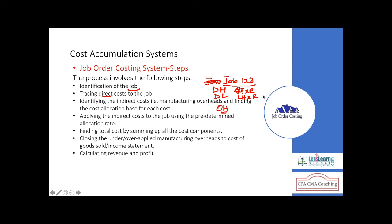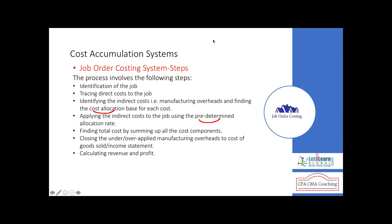These indirect costs are also known as overheads. Overheads are charged based on some allocation — we predetermine them and charge according to that predetermined overhead rate.